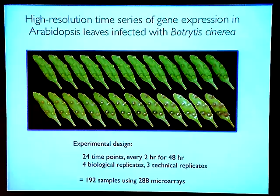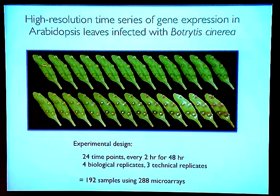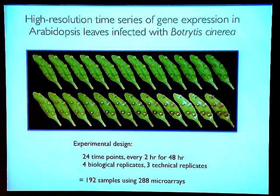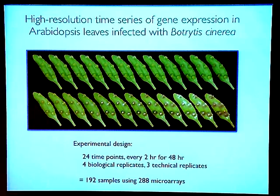For the Botrytis infection time series, it was a high-resolution time series — not a biologist's time series, but what mathematicians think is the absolute minimum. We had 24 time points: we infected detached leaves with droplet suspensions of Botrytis cinerea spores, harvesting an individual leaf every two hours for 48 hours. Around 22 to 26 hours you can start to see first primary lesions within the droplets, with spreading lesions not seen until around 36 hours. We had four biological replicates — four individual leaves at each time point — and three technical replicates, using CATMA microarrays. Every sample was leaf seven from a separate plant to minimise variation.